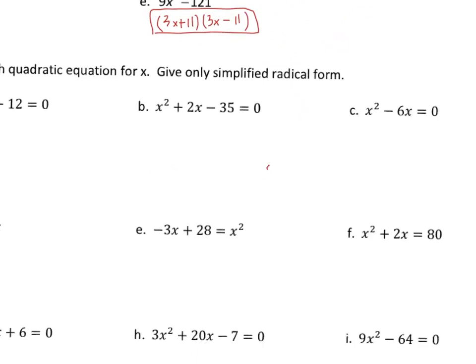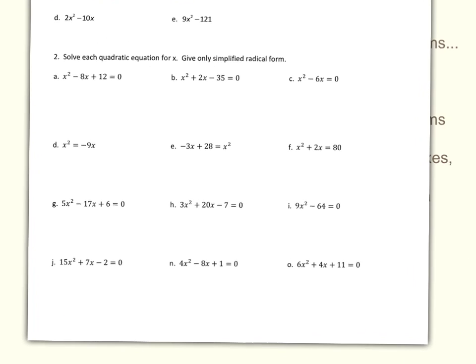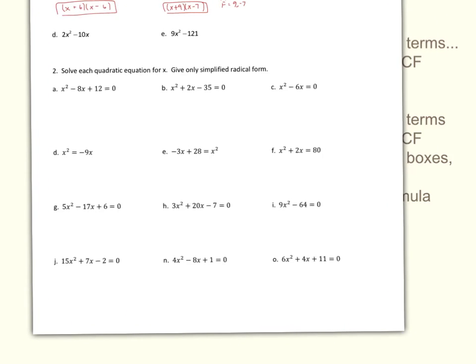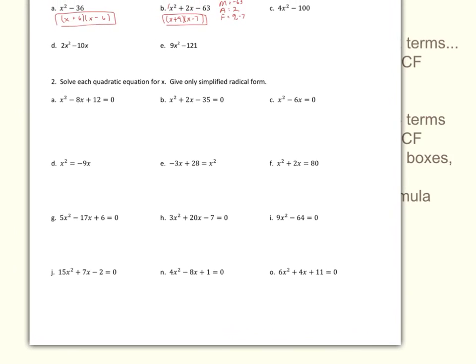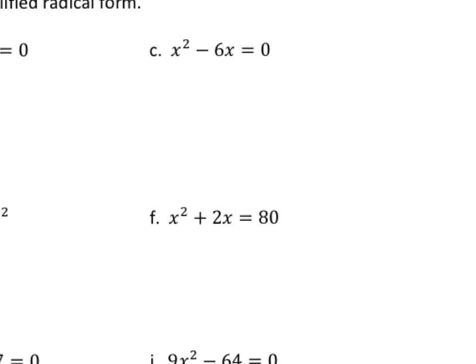Continuing on with this review sheet, if you're looking at the next set of questions, once again employ the idea that if you've got two terms, try GCF first and then see if you can do anything from there. These questions actually have you solving — so these questions have an answer. Basically what I want to find is what is x. Typically when you see x², you're going to get two answers. Looking at letter C, it's kind of tricky because it has two terms but you don't do difference of two squares.